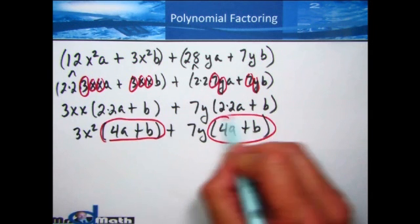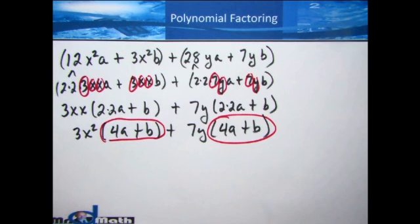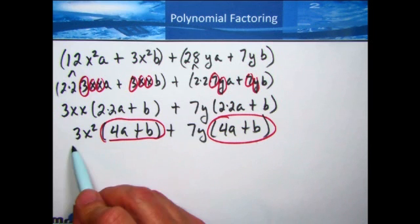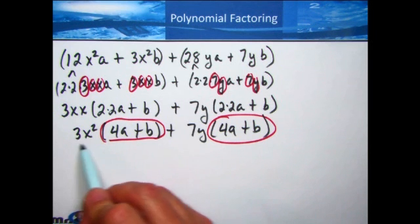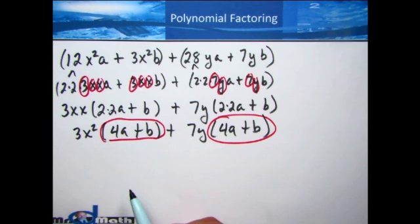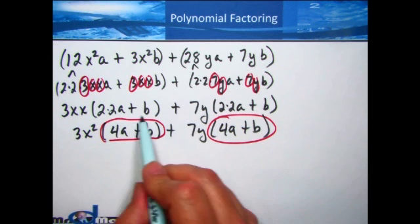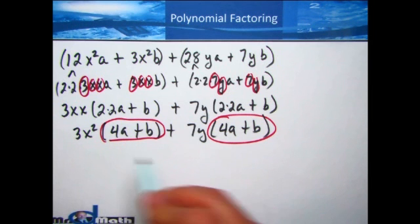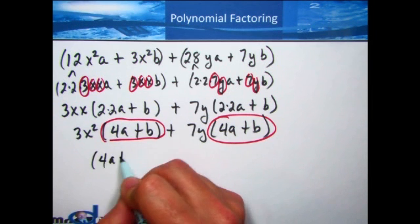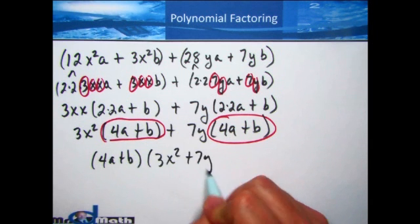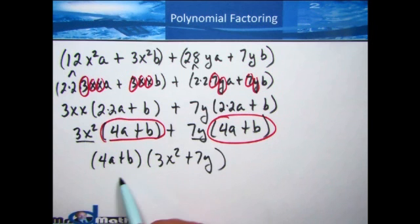Now we factor again. Both terms have (4a + b) in common, so we factor that out. What's left over is 3x² + 7y. The final factored form is (4a + b)(3x² + 7y). This is now fully factored.